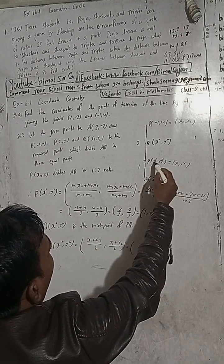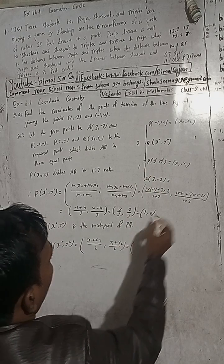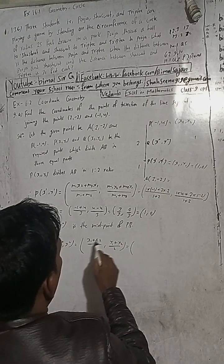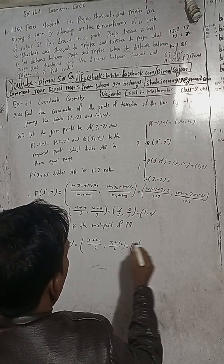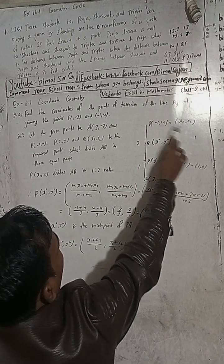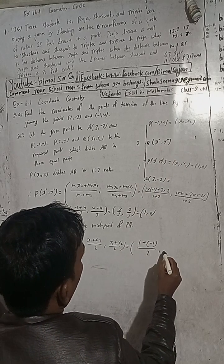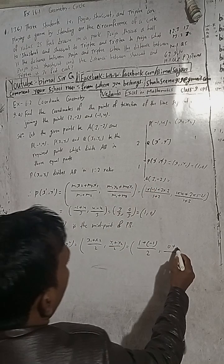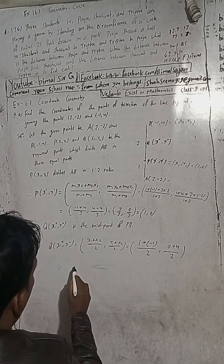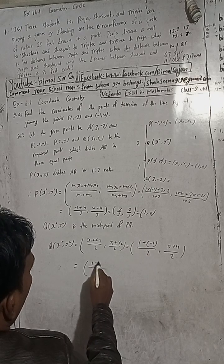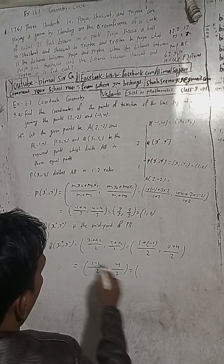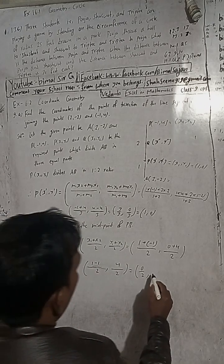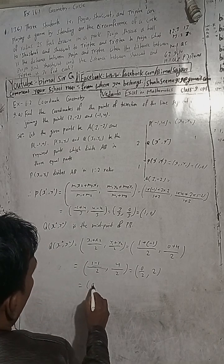The p value is (1, 0), so x1 equals 1 and y1 equals 0. B gives x2 equals minus 1 and y2 equals 4. Applying midpoint formula: x double dash equals one plus minus one divided by two equals zero, and y double dash equals zero plus four divided by two equals two. So Q equals (0, 2).